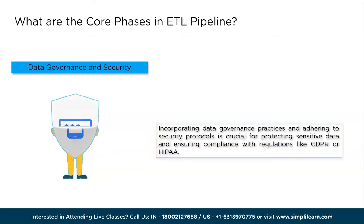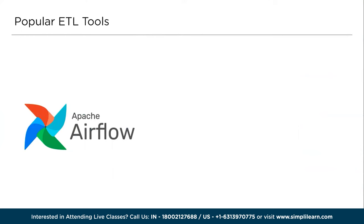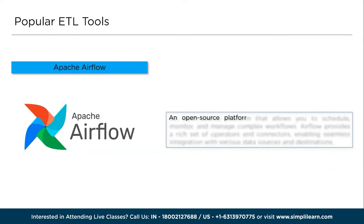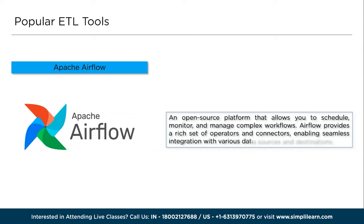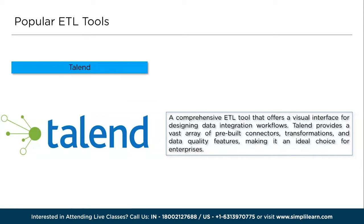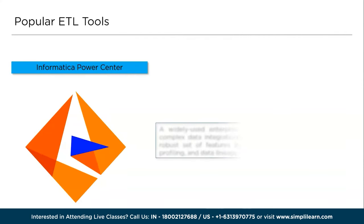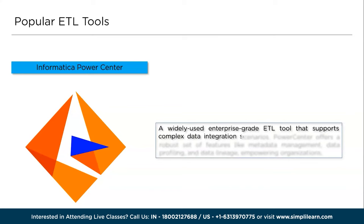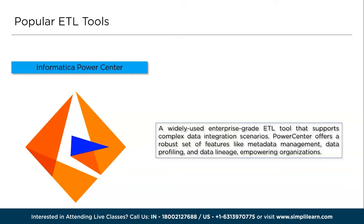Now that we've covered ETL stages and best practices, let's look at popular ETL tools. The first is Apache Airflow, an open-source platform that allows you to schedule, monitor, and manage complex workflows, providing a rich set of operators and connectors for seamless integration with various data sources and destinations. Next is Talend, a comprehensive ETL tool offering a visual interface for designing data integration workflows, with a vast array of pre-built connectors, transformations, and data quality features — making it an ideal choice for enterprises. Finally, Informatica is a widely used enterprise-grade ETL tool supporting complex data integration scenarios. Its PowerCenter offers robust features like metadata management, data profiling, and data lineage to empower organizations.